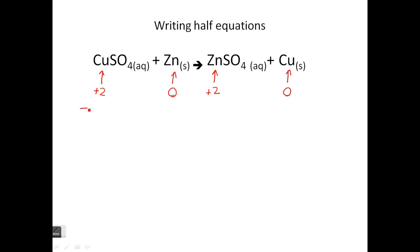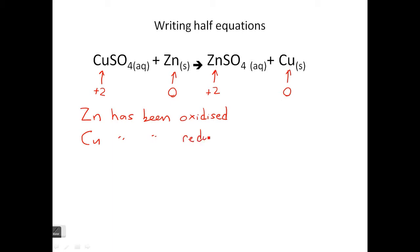So, the zinc has been oxidized in this reaction, and the copper has been reduced. Let's think of it in terms of electron loss and gain. If the zinc has been oxidized, it's lost electrons. Do you remember OIL RIG? If the copper has been reduced, it's gained electrons.